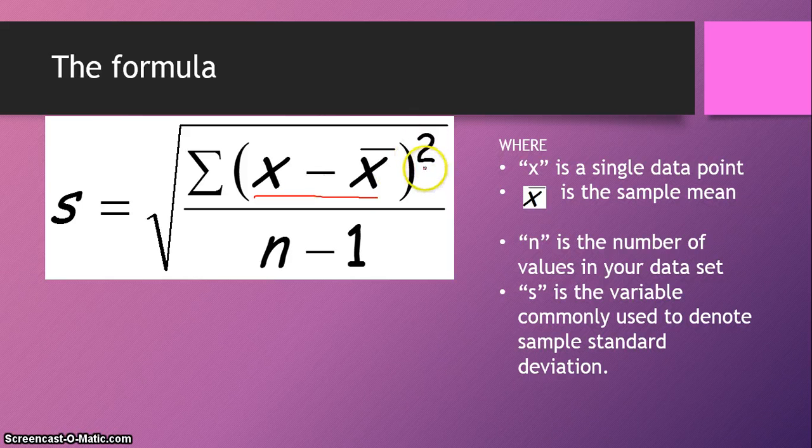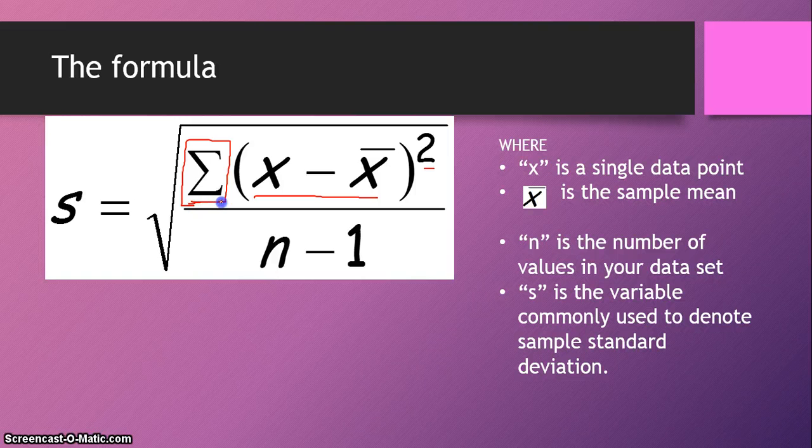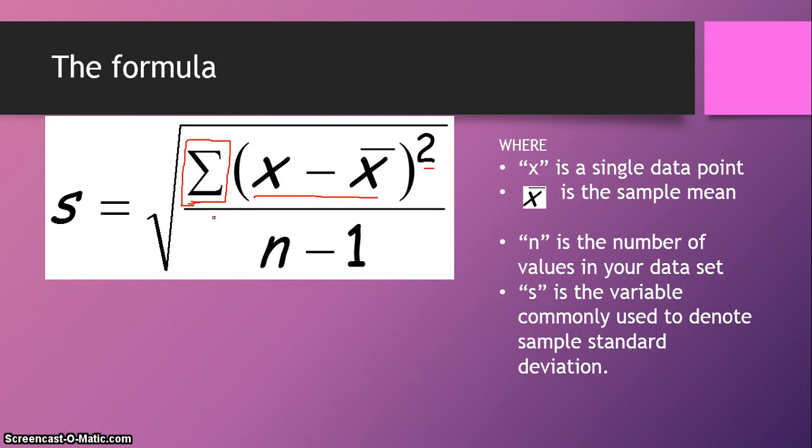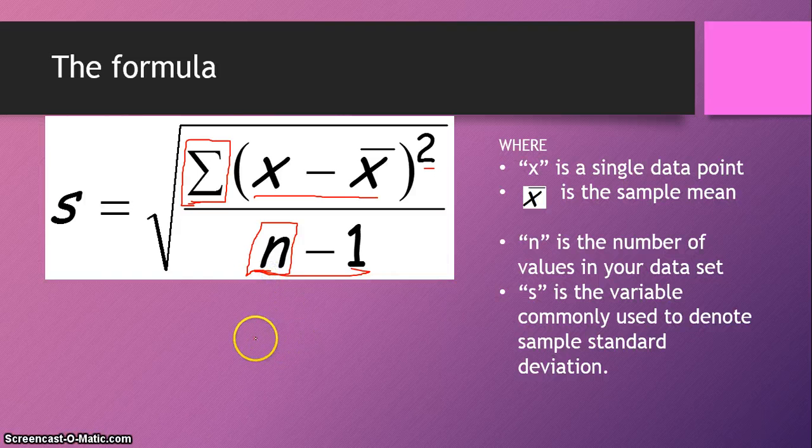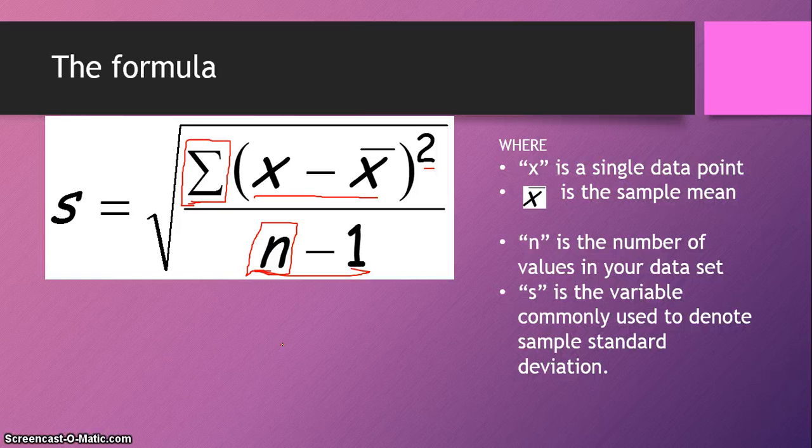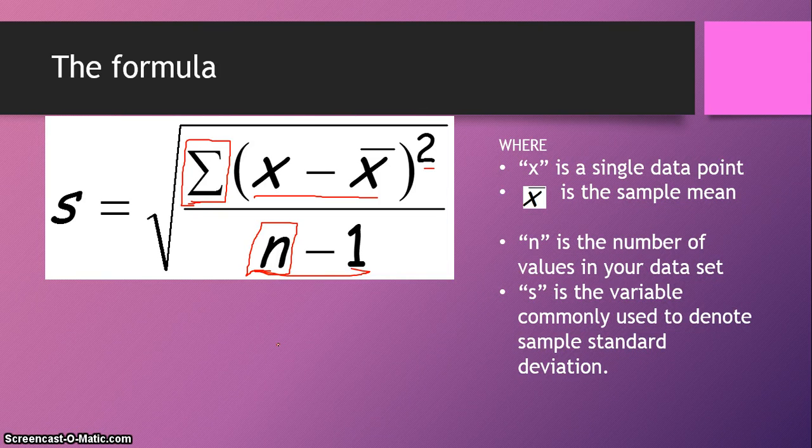And we're going to square it to get rid of the negative sign so we can add up. This sigma right here means we need to add up all of our squared deviations. So we can get a total and divide it by n minus 1. And this n right here is your total number of observations. So if I had 10 data values in a data set, my n would be 10. And what we're doing is essentially adding up all the squared deviations and dividing it by n minus 1 so that we can get an average value for how far away each data point is from the mean.